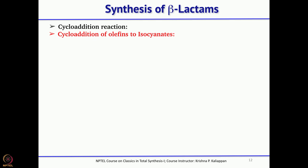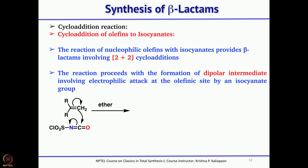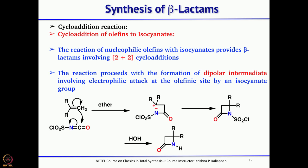One can also use 2+2 cycloaddition reactions to form beta-lactams. One component should be an alkene and the other should be an isocyanate. The isocyanate and double bond can undergo a spontaneous 2+2 cycloaddition to give the corresponding beta-lactam. If you use chlorosulfonyl isocyanate, you get a beta-lactam where the chlorosulfonyl group can be easily removed simply by treatment with water, which cleaves the SO₂Cl group.